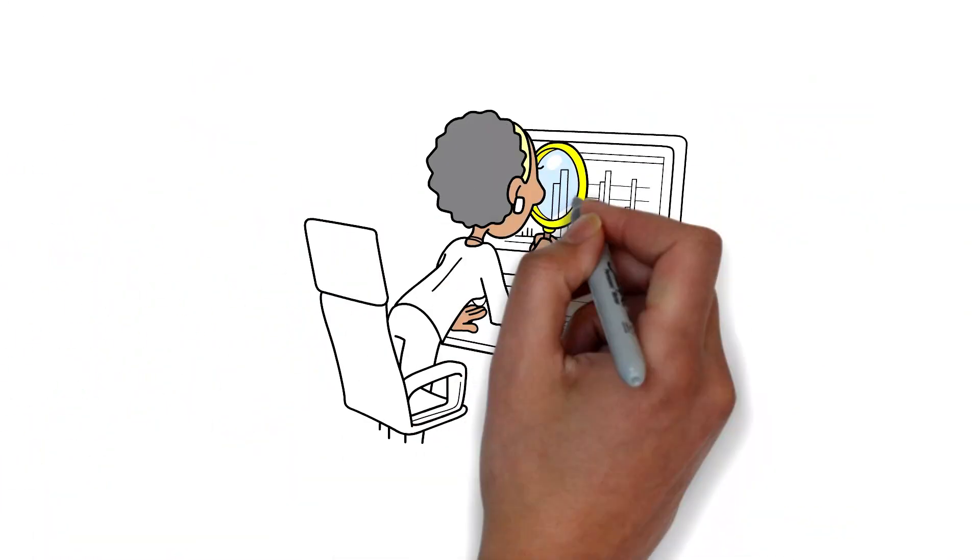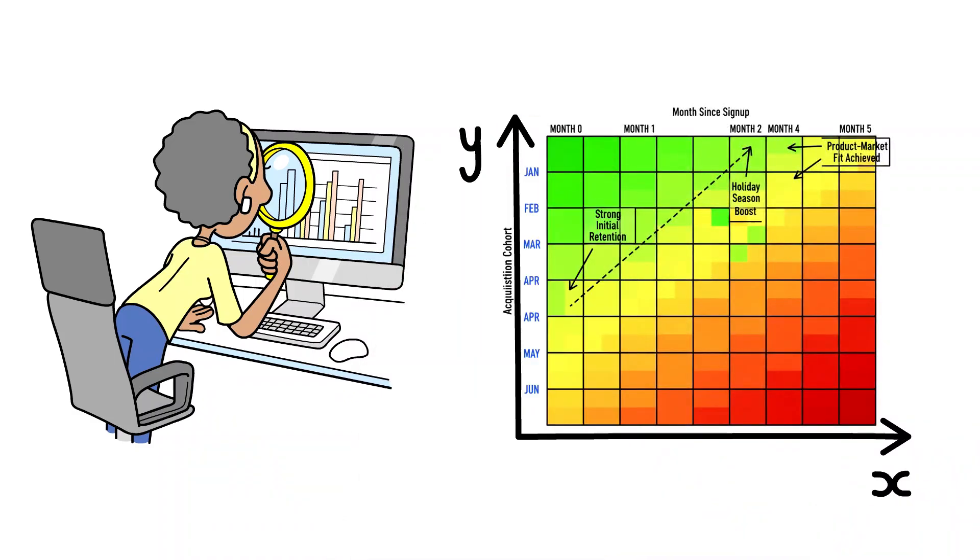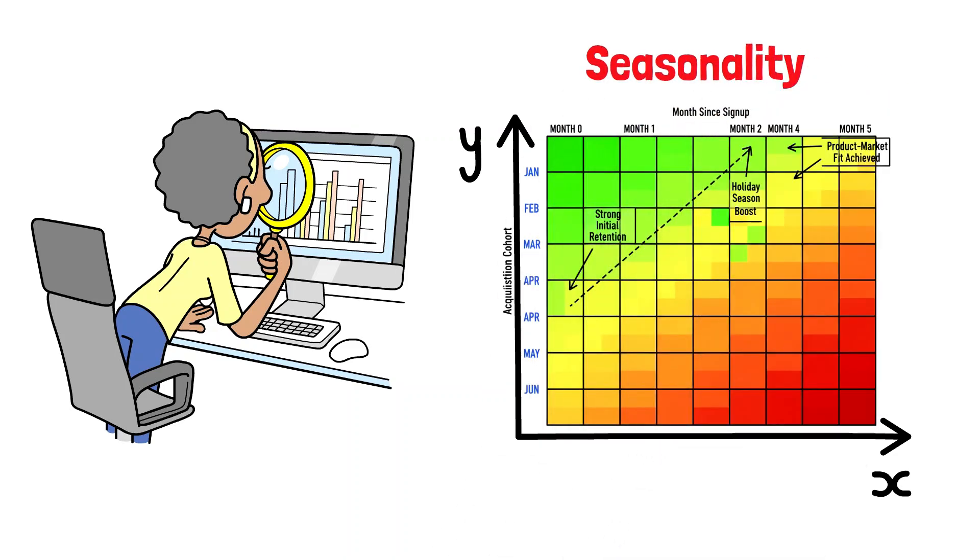Once you have your chart, the magic is in reading the patterns. Look at the diagonals. They show you how different cohorts behave at the same point in their lifecycle. You can spot seasonality, like a dip in retention for cohorts acquired during the holidays.